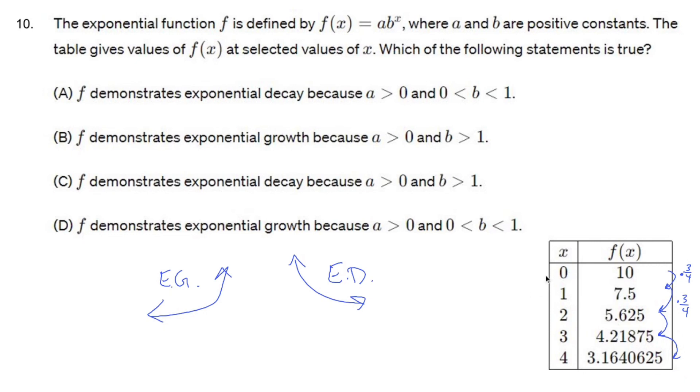It's an exponential function. As long as these guys go up by the same number, that's equal length input values, intervals, these guys multiply by the same number. So we are exponential decay because we're multiplying by three quarters.